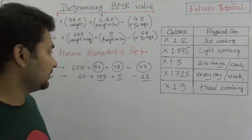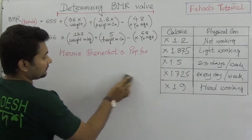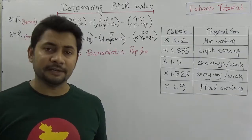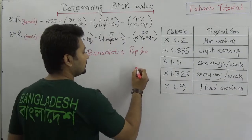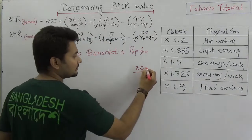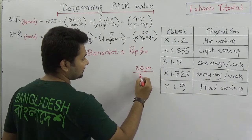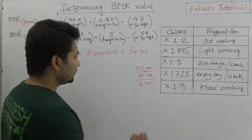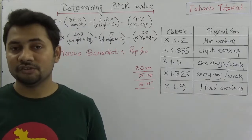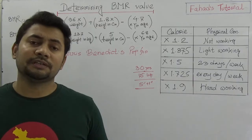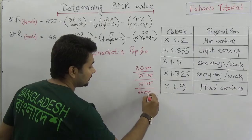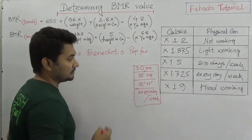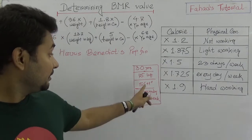Now let's think about how to determine someone's BMR. Suppose a moderate worker, 30 years of age, with a body weight of about 75 kilograms, and height of 5 feet 11 inches, working every day. So we have: 30 years of age, 75 kilogram body weight, and 5 feet 11 inches height.